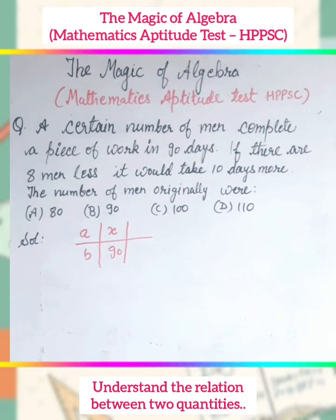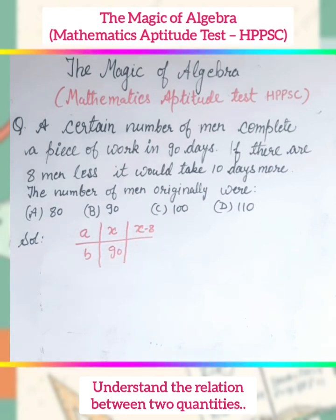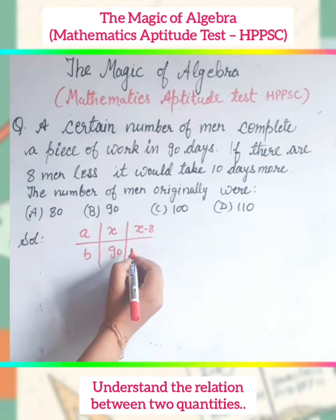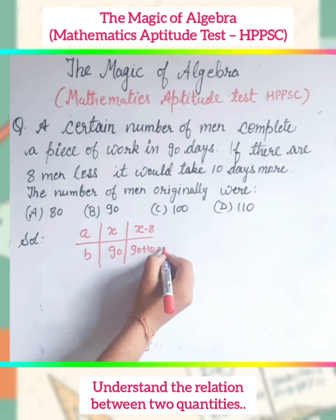If the number of men are 8 less, means if it is X minus 8, then number of days will be 10 more. Means it will take 90 plus 10, that is 100 days.